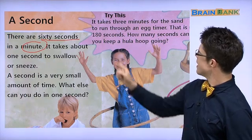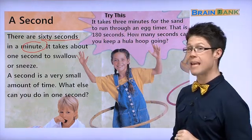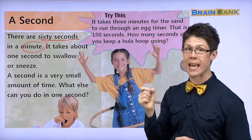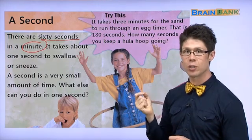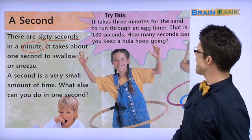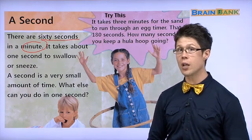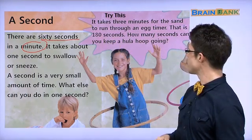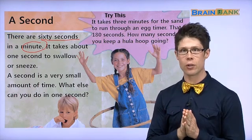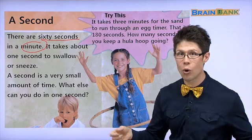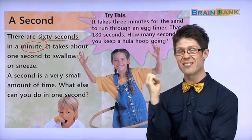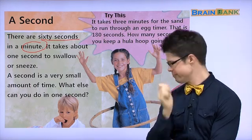Let's take a look at this. It takes three minutes — 삼 분 — for the sand to run through an egg timer. Egg timer, 모래시계. It takes about three minutes for the sand to run through an egg timer. That is one hundred and eighty seconds. 백팔십 초. How many seconds can you keep a hula hoop going? Hula hoop 있어요? Hula hoop 운동을 좀 하고 몇 초 동안 할 수 있어요? Maybe 30 seconds? 삼십 초만 할 수 있어요?